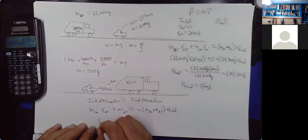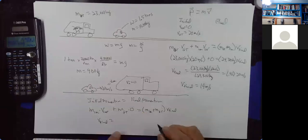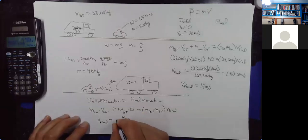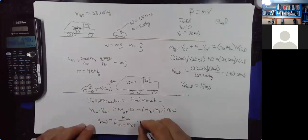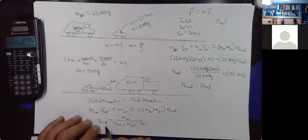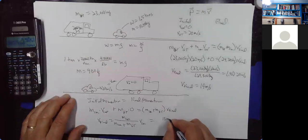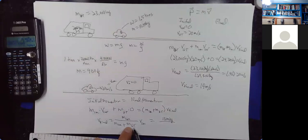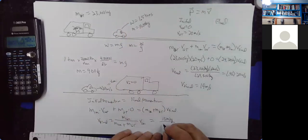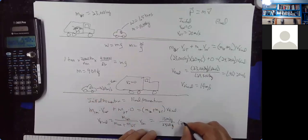Solving in letters first — my preference — V_final equals the mass of the car divided by the mass of the car plus the mass of the garbage truck, times V_car. Plugging in: mass of the car is 1,300 kilograms; mass of the car plus the garbage truck is 1,300 plus 23,000, that's 24,300 kilograms; multiplied by the velocity of the car, which was 20 meters per second.